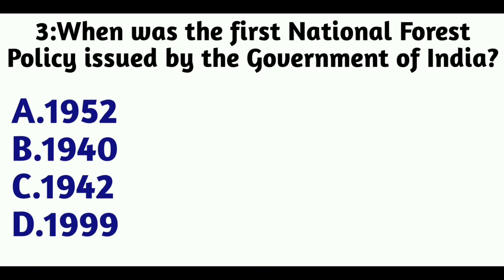Question 3: When was the first National Forest Policy issued by the Government of India? Option A: 1952, Option B: 1940, Option C: 1942, Option D: 1999. The answer is Option A, 1952.